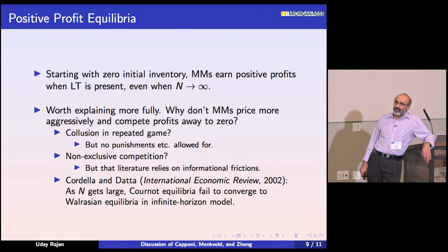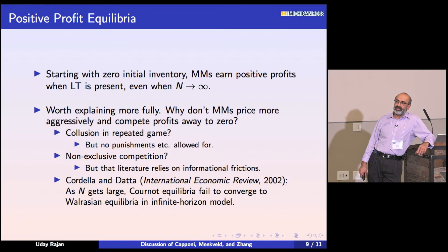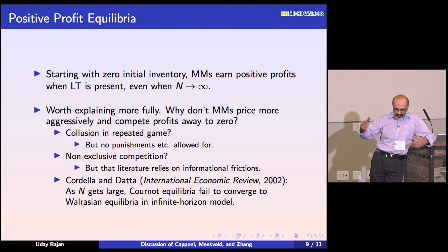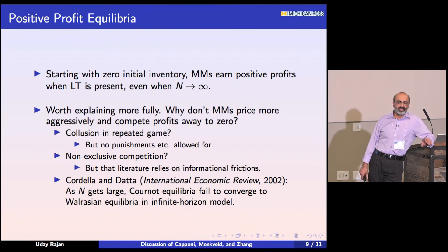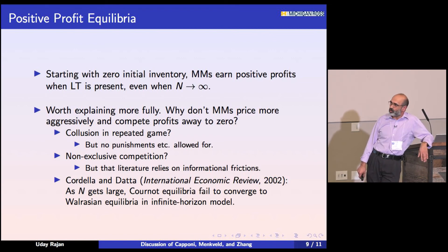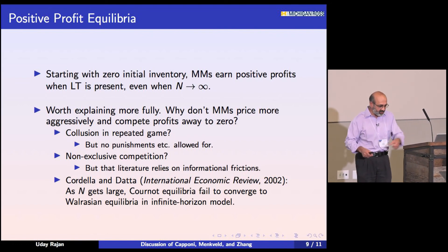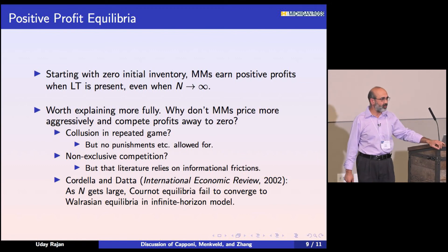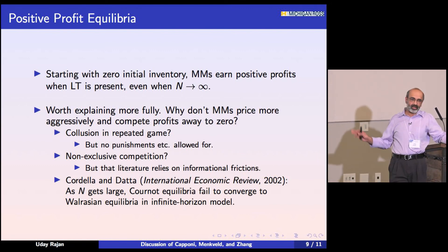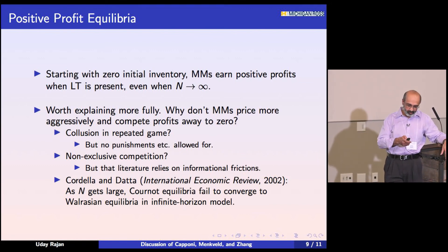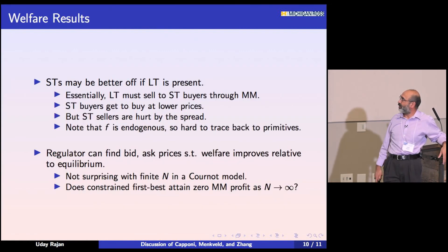One paper I want to mention is Cordella and Dutta, 2002. They look at a general equilibrium model of a production and consumption economy where agents consume as well. They show that the dynamics really matter — as N gets large, Cournot equilibria fail to converge to Walrasian equilibria, because at time t when somebody takes an action, they take into account the impact this will have in the long term, and potentially you can get something like positive profits out of that.